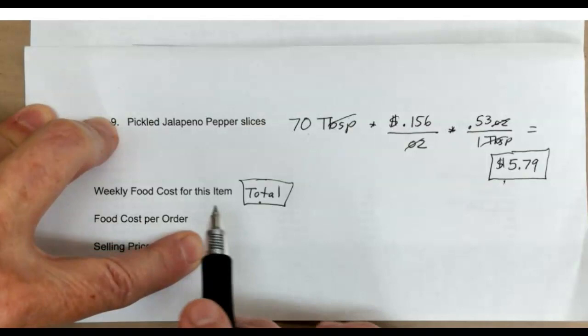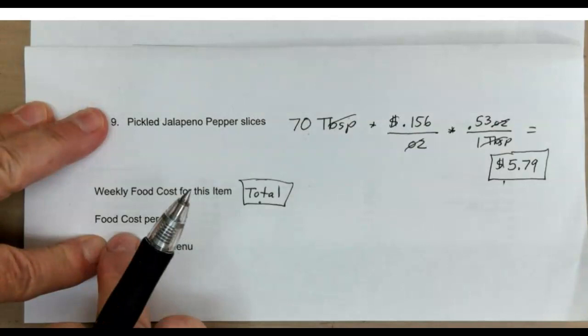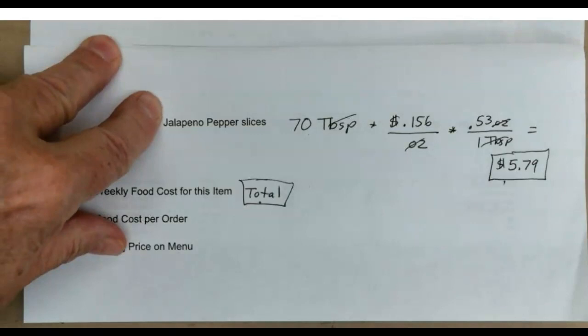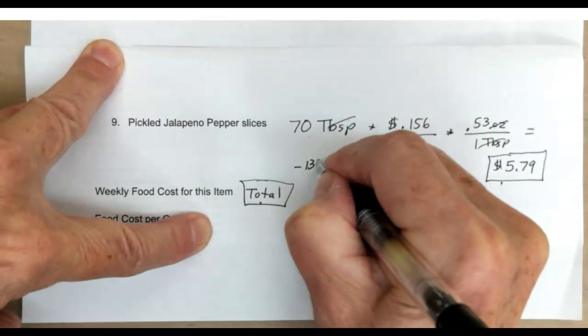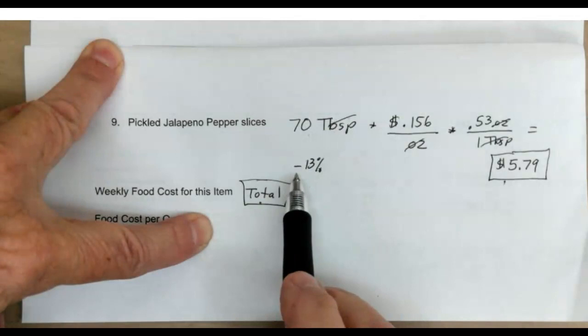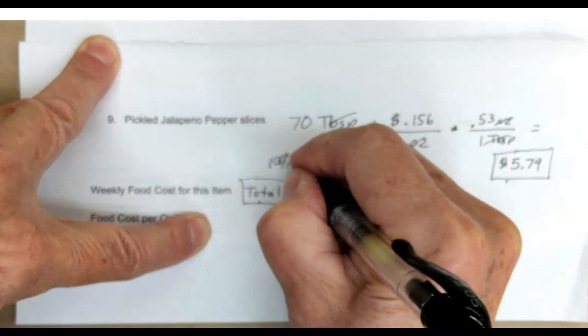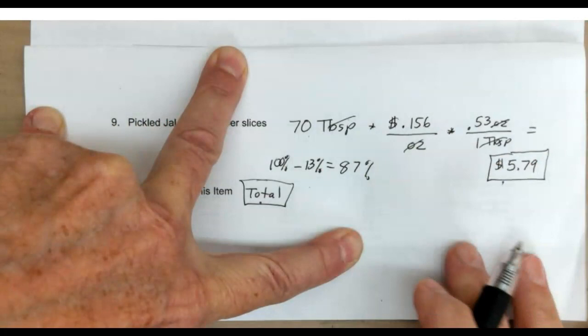Once you get that total, that is for grocery store prices. Since grocery store prices are retail, we're going to take a discount off of it and minus 13% from that price. My recommendation is that you take 100% minus 13%. So when I take 100% minus 13%, I get 87%.